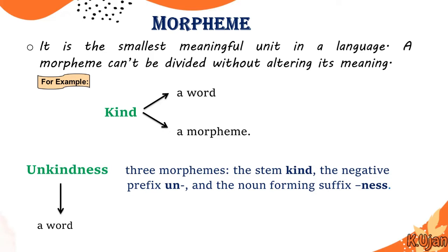Sometimes morphemes, as already defined, are the smallest meaningful unit, and sometimes they are the smallest functional words in a language. For example, the morpheme '-ness' does not have any meaning on its own, but it carries a grammatical function in the word 'unkindness' — it makes the word a noun.